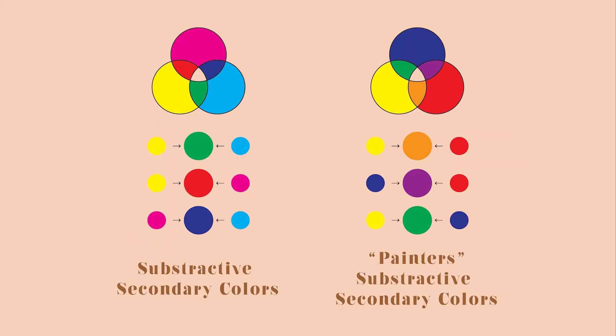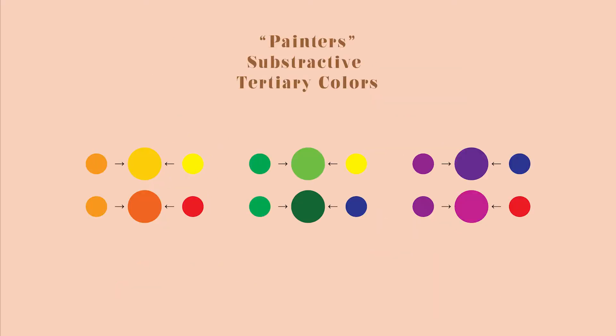Secondary colors are the ones you get when you combine two primary colors. In the subtractive color wheel they are green, red and blue. In the painter's color wheel they are orange, green and violet. And finally we have tertiary colors — they are secondary colors mixed with a primary color, so you get a bluer, redder or yellower hue.